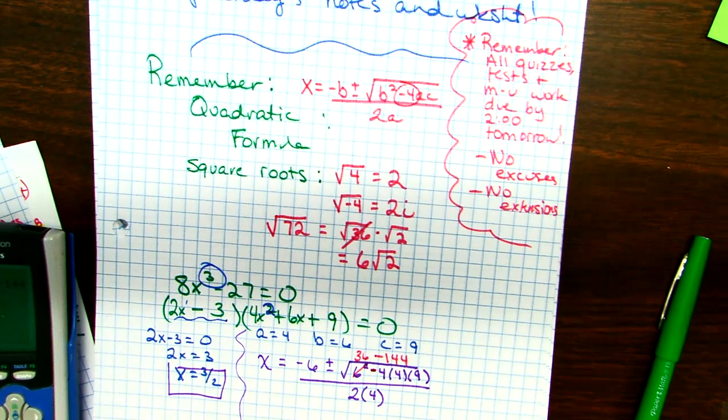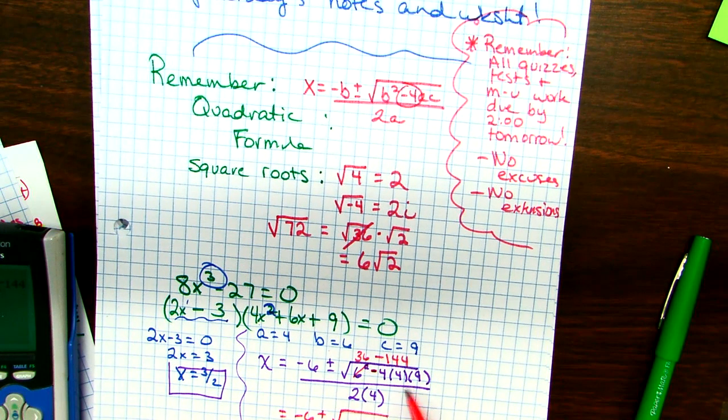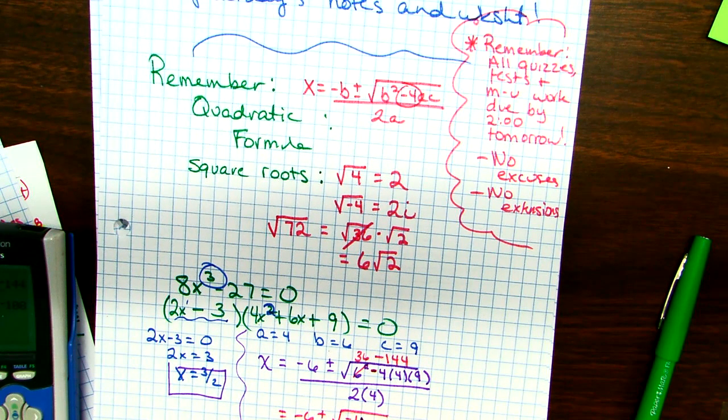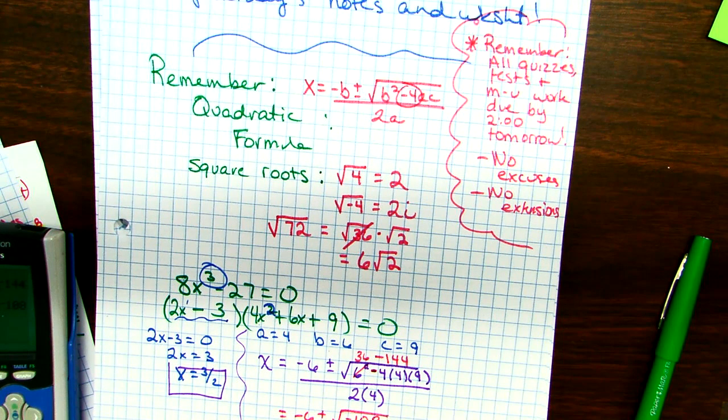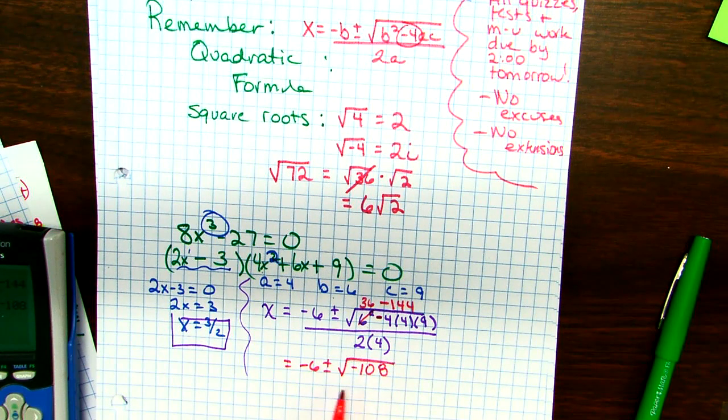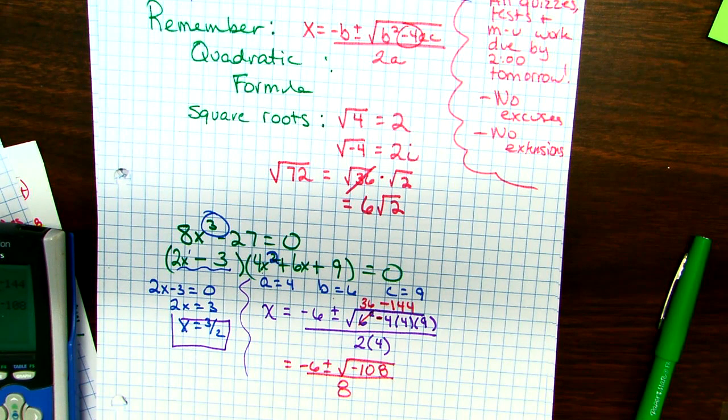Okay? So now, I'm going to go down. Negative 6 plus or minus. Remember, those numbers I wrote above really are underneath. So let's do 36 minus 144, and I get negative 108. That means I'm going to have an i in my answer. No big deal. Over 8. The hardest part of quadratic formula is simplifying the radical. Not because of the negative.